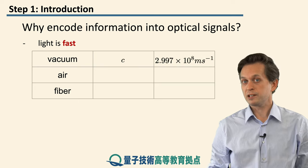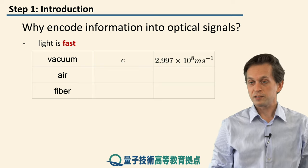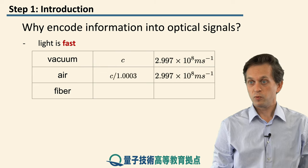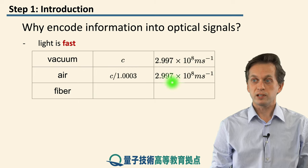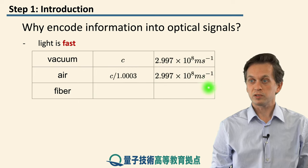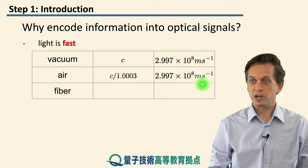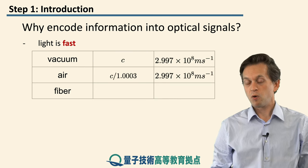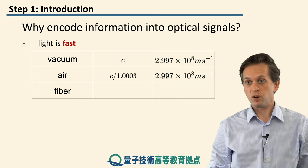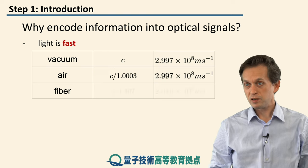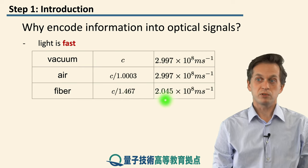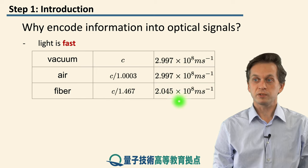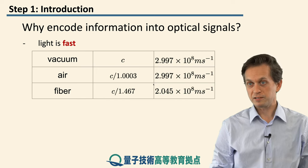However, we don't send light through vacuum when we communicate. We can send it through air, where the light slows down by a factor of 1.0003 — so that doesn't limit the speed of light that much. Or we can send light through optical fibers, pieces of glass where the speed of light decreases by a factor of 1.467, resulting in 2.045 times 10 to the 8 meters per second. So that's still very, very fast.